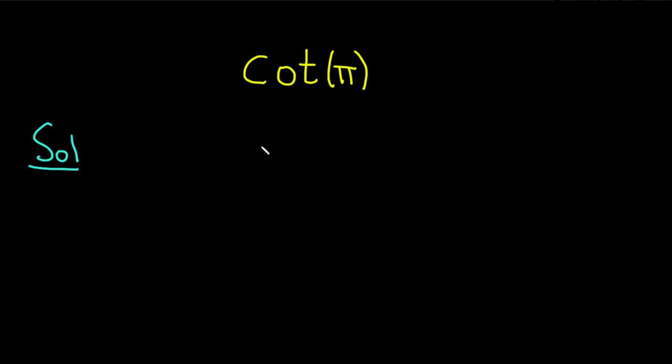So first note that the cotangent of x is actually equal to cosine of x divided by the sine of x.